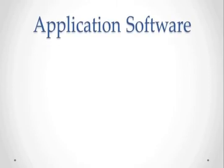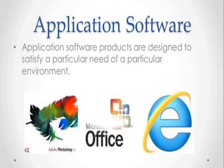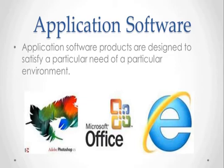Application software products are designed to satisfy a particular need of a particular environment. Application software may consist of a single program such as Microsoft Notepad for writing and editing simple text. It may also consist of a collection of programs, often called a software package, which work together to accomplish a task such as a spreadsheet package. Some examples are antivirus software, payroll software, student record software, inventory management software, income tax software, and railway reservation software.